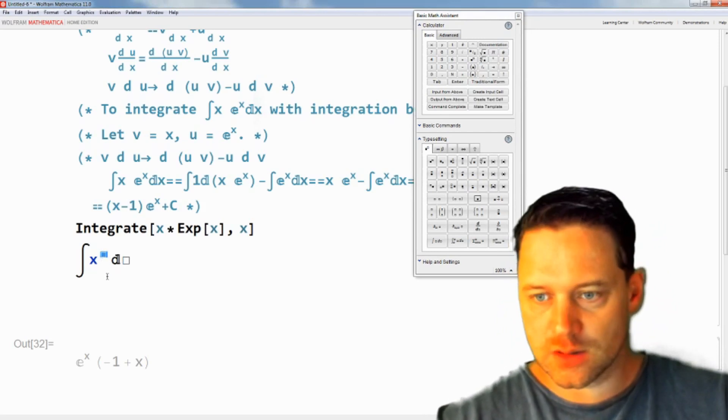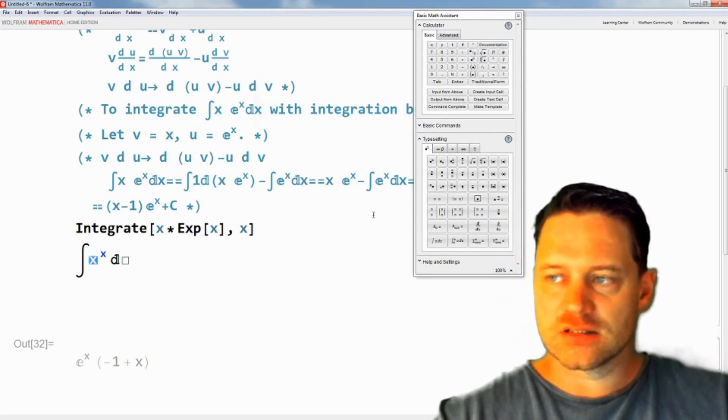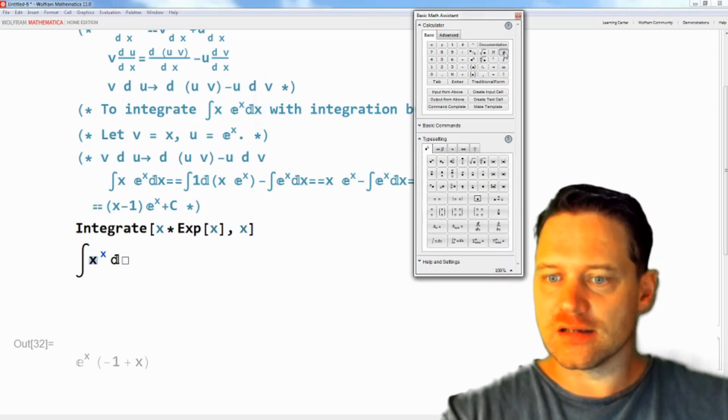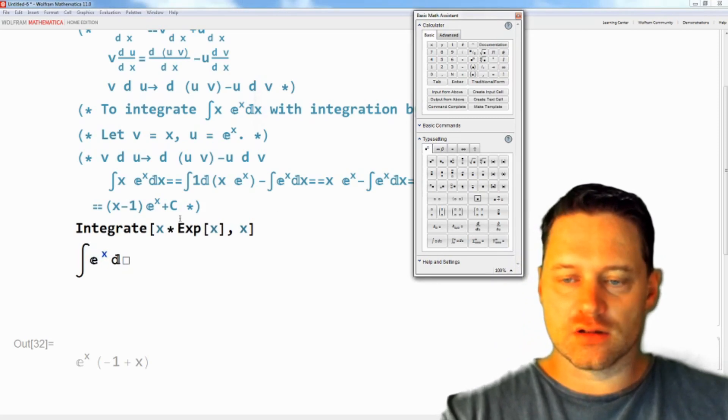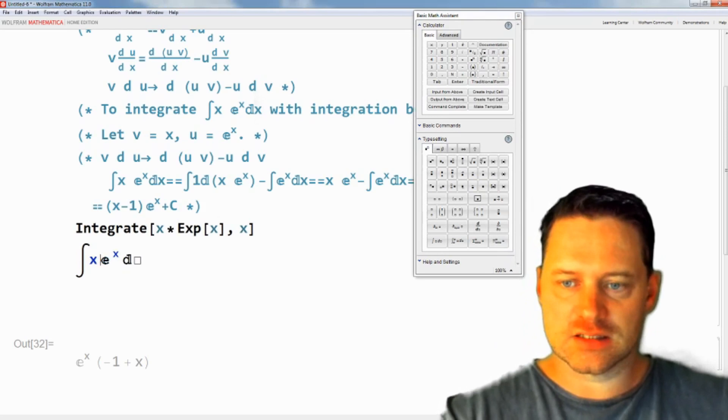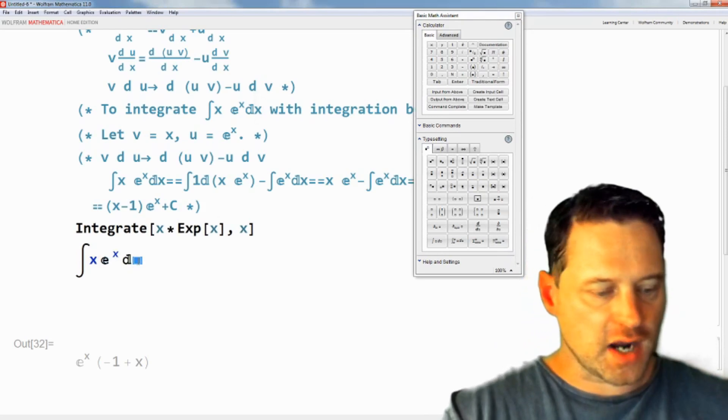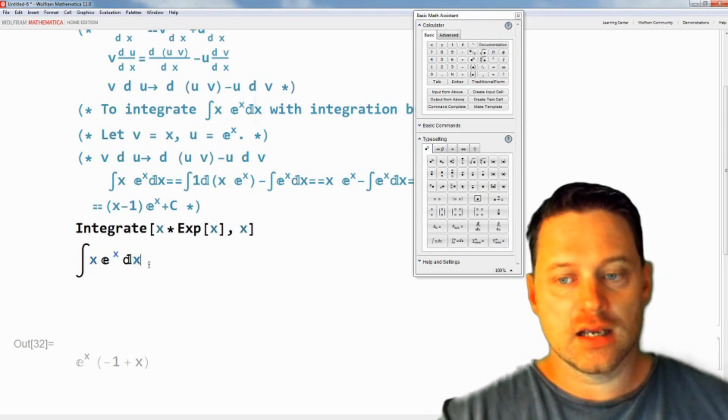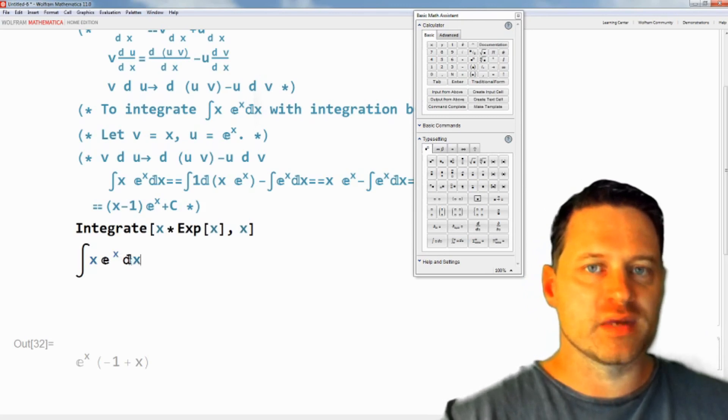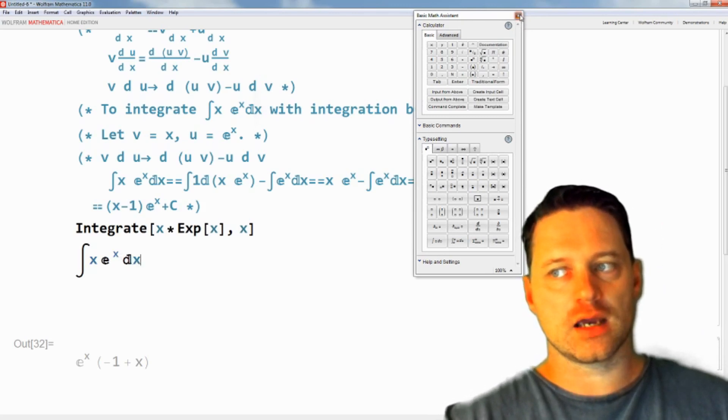Now I'll press the e button for the base of the natural logarithm and then I'll replace that x times that there. Finally, I'll enter x in the box for what I'm integrating with respect to. And I'll close the palette.